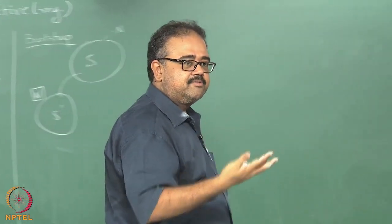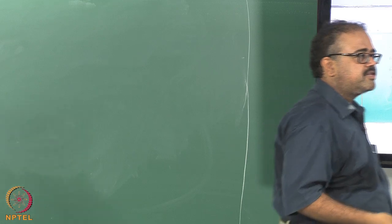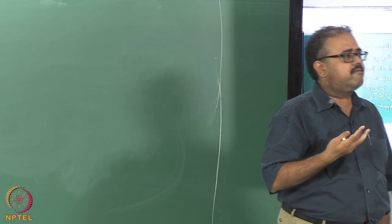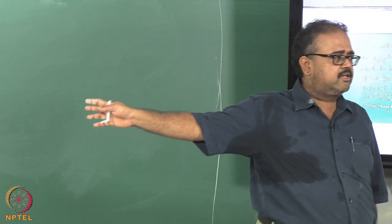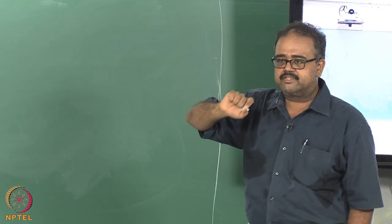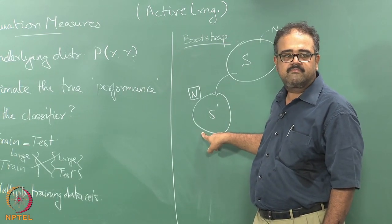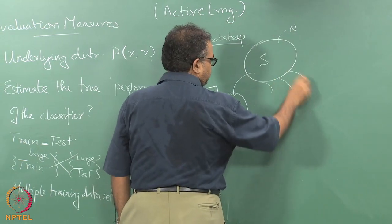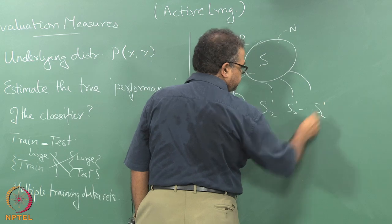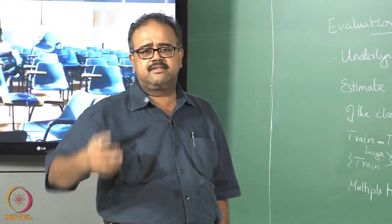I am going to assume that set S is representative of the underlying data distribution, and simulate the underlying data distribution using the discrete distribution formed by S. The discrete distribution means only these N points will have nonzero probability of occurring. I can sample from that to get S prime. I will call it S1 prime, and I can do that multiple times to get up to SL prime — many many such samples.